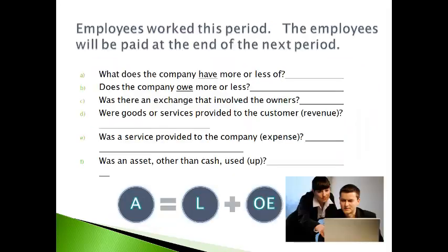Let's go through one transaction and use the questions to determine what will be reported on the financial statement. The first three questions relate to the balance sheet and the last three relate to the income statement. Employees work this period and will be paid at the end of the next period. The company does not have more or less of anything. The company owes employees. The owners were not directly involved with the transaction.